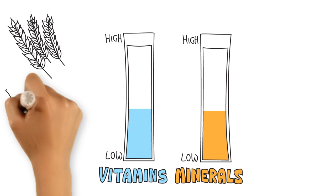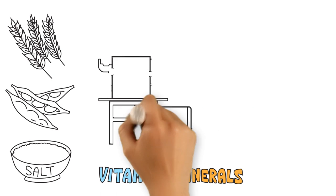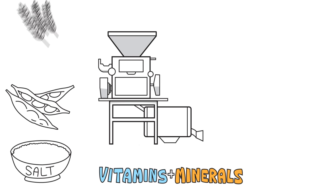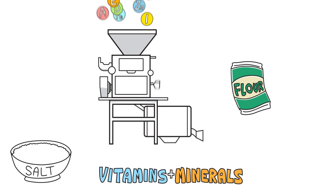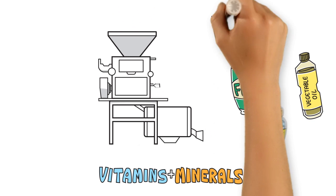Vitamins and minerals are added to staple foods and condiments at the normal processing stage such as wheat and maize milling, vegetable oil refining, salt grinding, and condiments production.